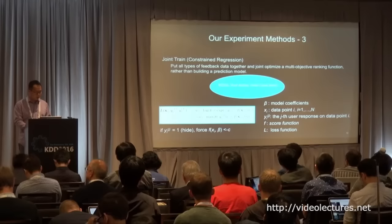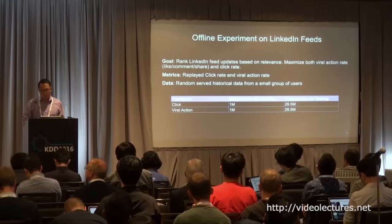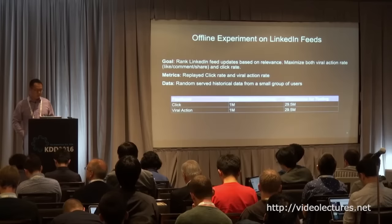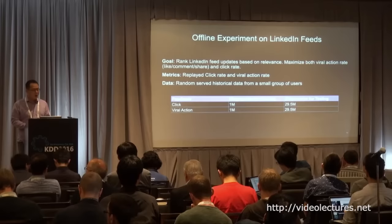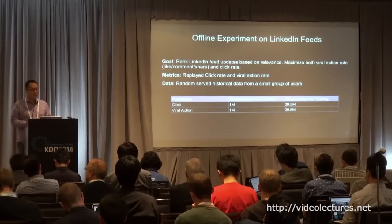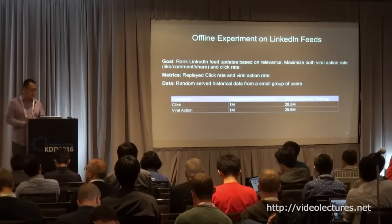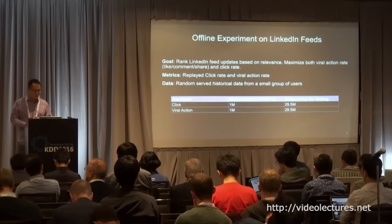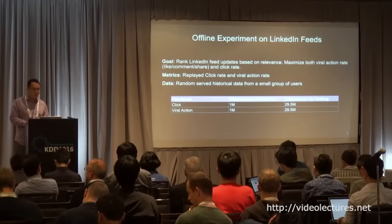We first did offline experiments. At LinkedIn, when we develop a model, we first do offline experiments. Because it's a ranking problem, we use a very small subset of traffic to randomly shuffle all items, which gives us unbiased data. We then run a simulation called a replay on this unbiased data to simulate what would happen — what would be the click rate, the viral action rate, or the hide rate — if we ran the testing model.